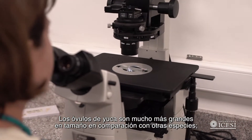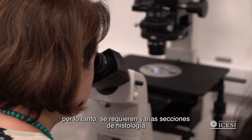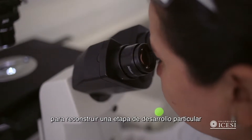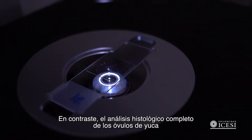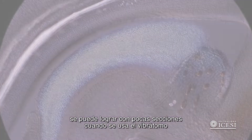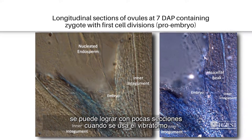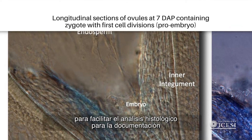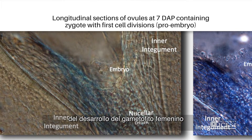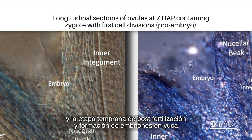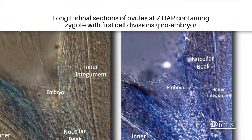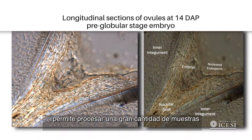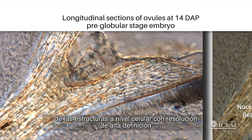Cassava ovules are much larger in size compared to other species. Therefore, several histology sections are required to reconstruct a particular developmental stage. In contrast, complete cassava ovule histology analysis can be accomplished in a few sections when using the vibratome. The objective of this work was to use the vibratome to ease histology analysis for documentation of the female gametophyte and early post-fertilization stage and embryo formation in cassava. The ease and fast processing of samples permits processing of large numbers of samples, providing high-standard resolution of structures at the cellular level.